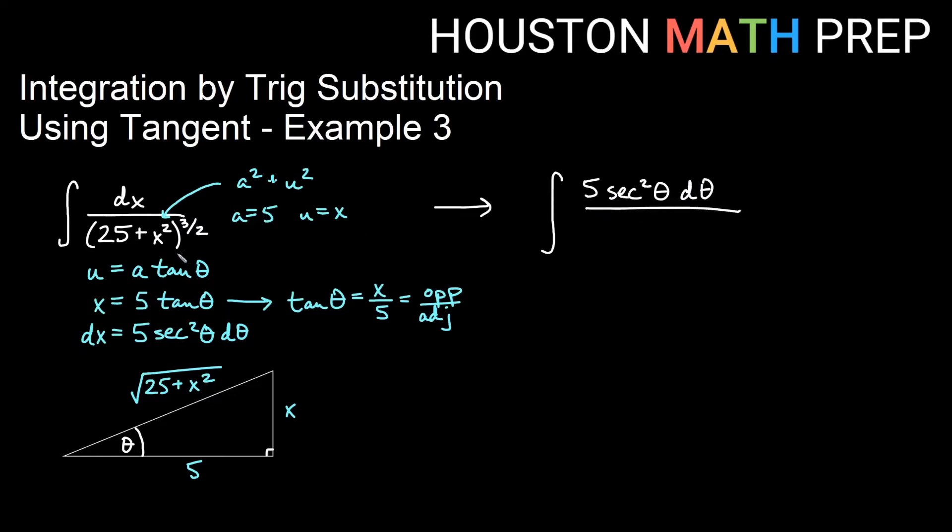And then on the bottom, we will get 25 plus, when I square x, I square that and I get 25, and I also get tan squared theta. All of that to the three halves.